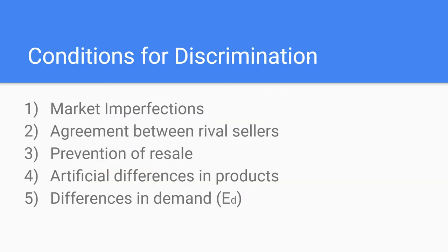Now let's take a look at the conditions needed for price discrimination. There needs to be market imperfections, because if there was perfect information, you cannot charge different prices. If there is more than one seller, there also needs to be agreement between them regarding price fixation. Price discriminators must also ensure that there is no one in the market buying the products sold at a lower price and then reselling them at a higher price — so there should be a prevention of resale.